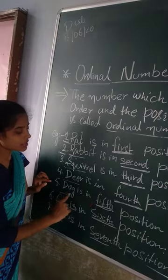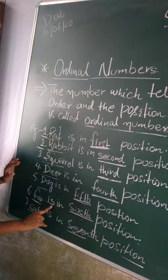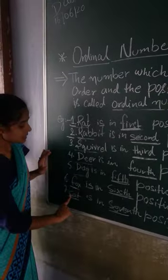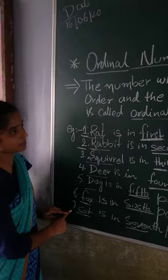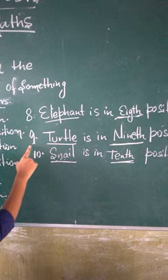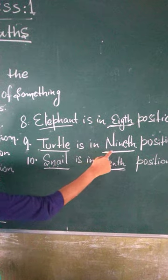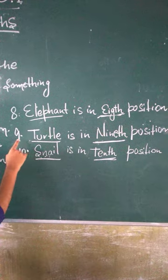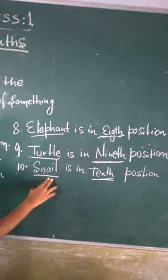The fifth is Dog. Dog is in fifth position. Fox is in 6th position. Cat is in 7th position. Elephant is in 8th position. Turtle is in 9th position. Snail is in the 10th position.